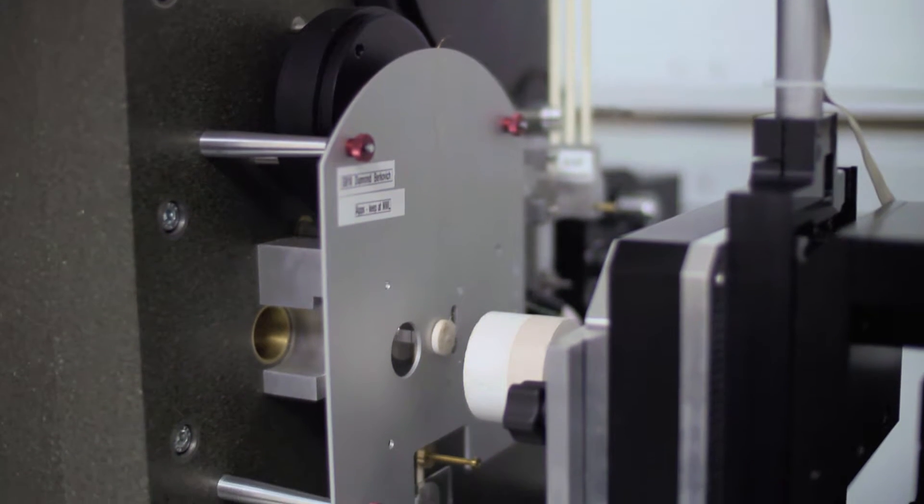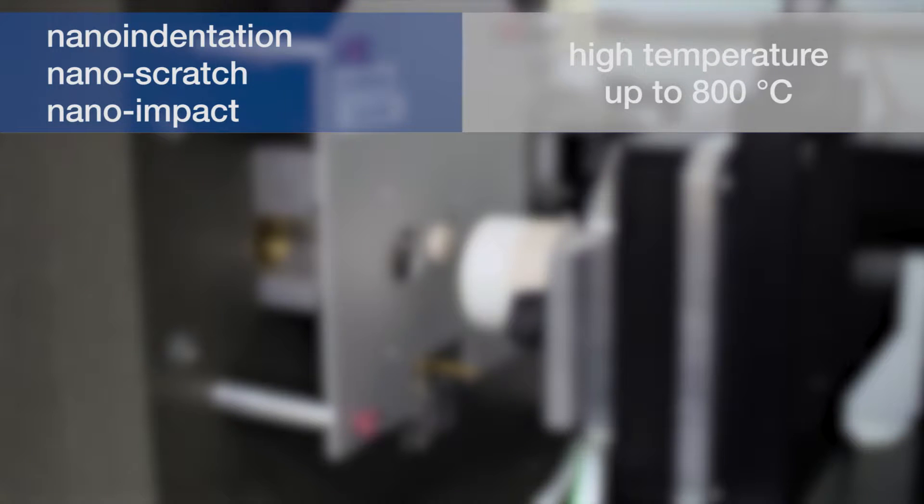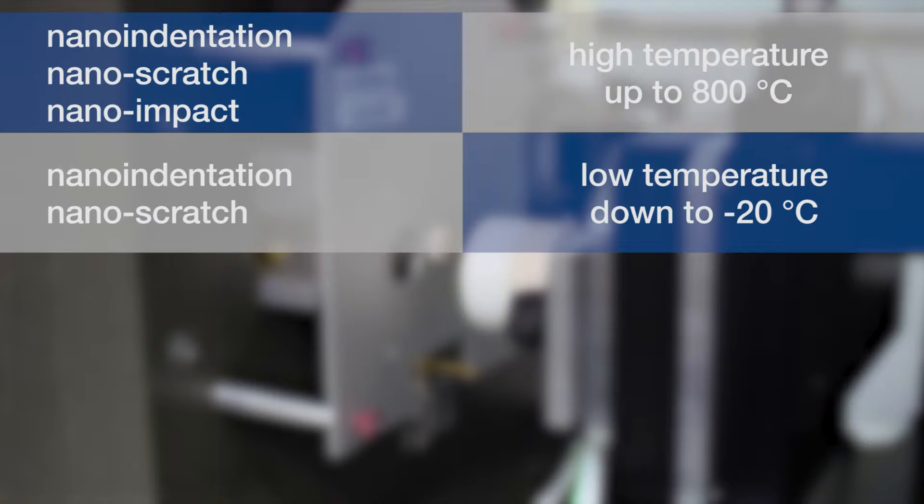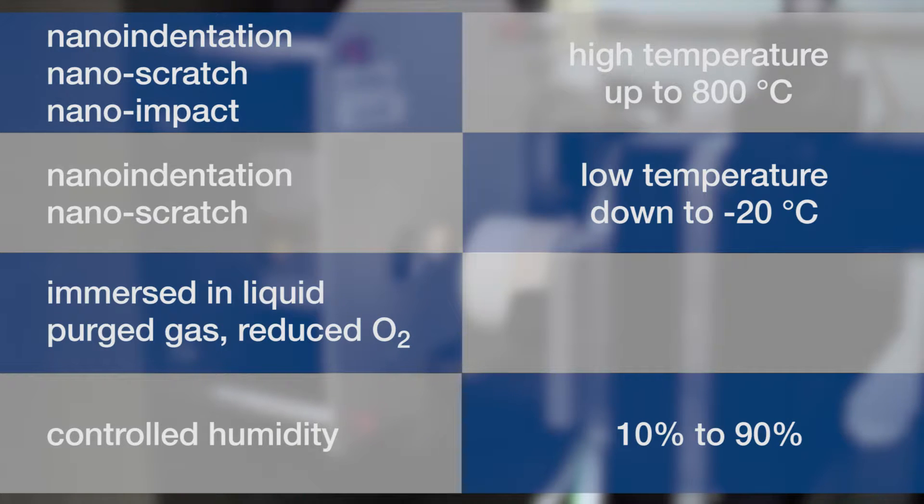High temperature nano-indentation, nano-scratch, and nano-impact to 800 degrees Celsius. Low temperature nano-indentation and nano-scratch to minus 20 degrees Celsius, with the sample and probe immersed in a liquid. In a purged gas-reduced oxygen environment, under controlled humidity levels from 10% to 90% relative humidity.